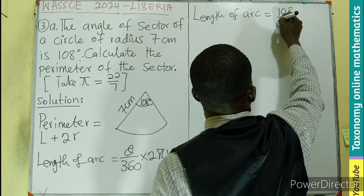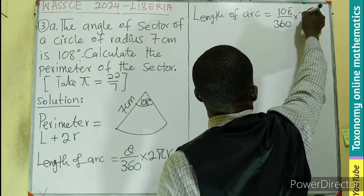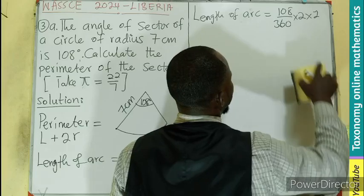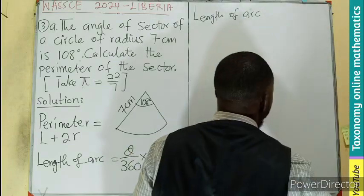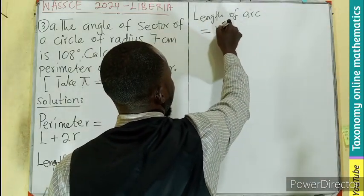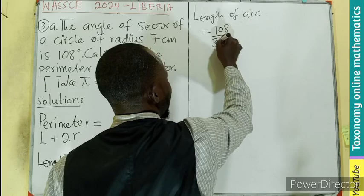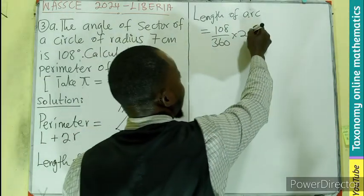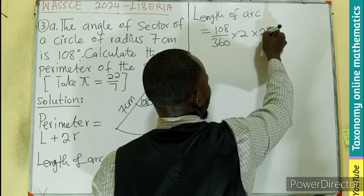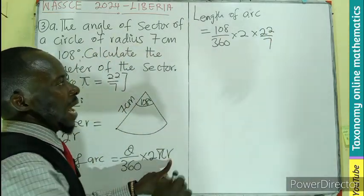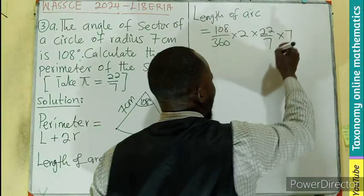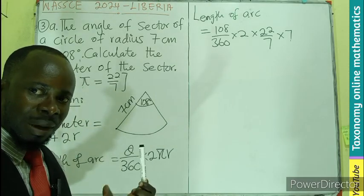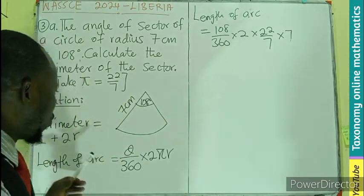108 divided by 360 times 2 times π, which is 22/7, times the radius which is 7 centimeters. We're only doing substitution.